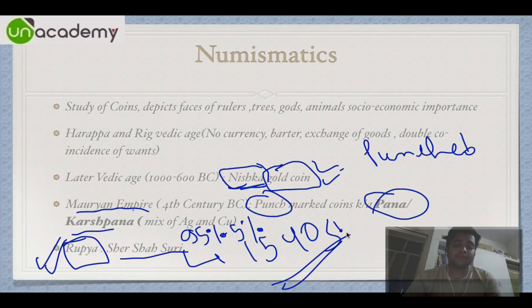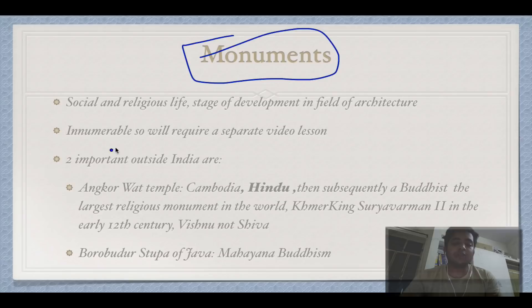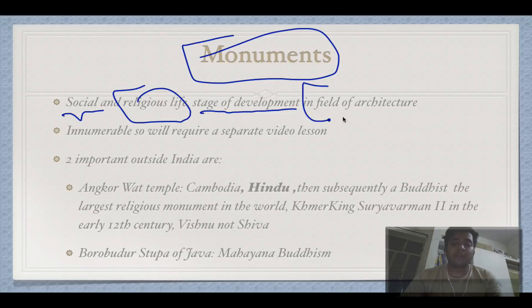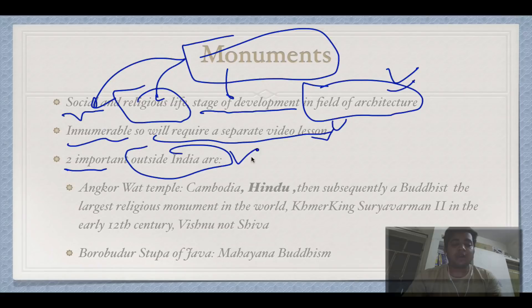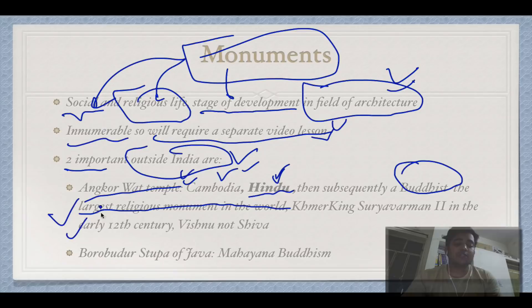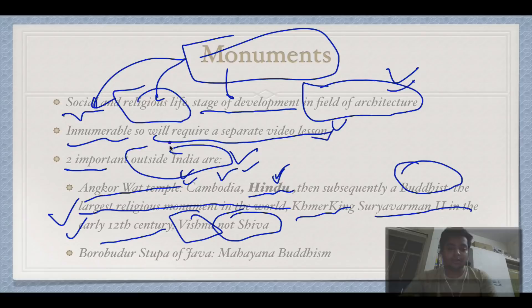Monuments deal with social and religious life and show the stage of development in the field of architecture. Two important monuments outside India: Angkor Wat temple in Cambodia was originally a Hindu temple, later converted to a Buddhist temple. It is the single largest religious monument in the world, built by Khmer King Suryavarman II in the early 12th century and dedicated to Vishnu. Borobudur Stupa in Java is dedicated to Mahayana Buddhism.